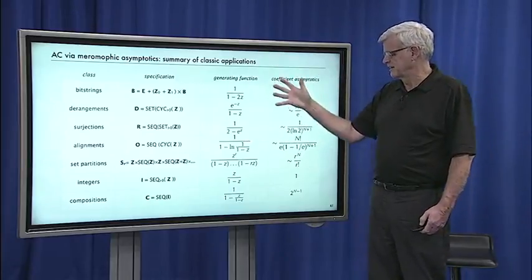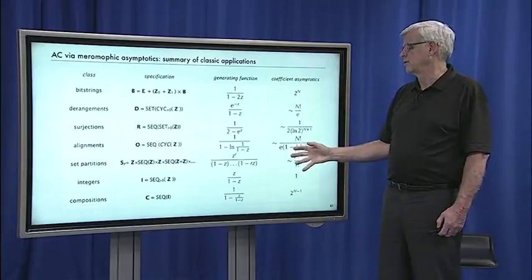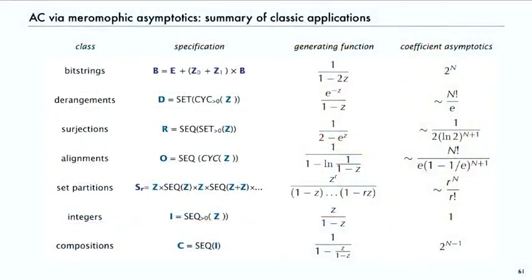we took a specification immediately to a generating function via the symbolic method, and then immediately to coefficient asymptotics using the meromorphic transfer theorem.